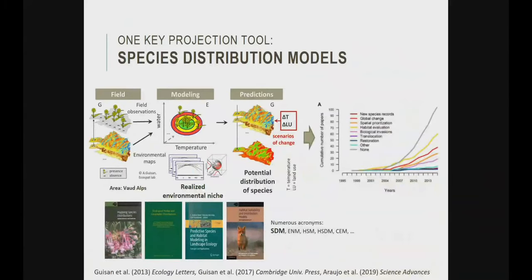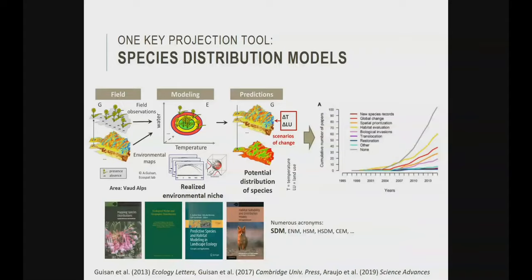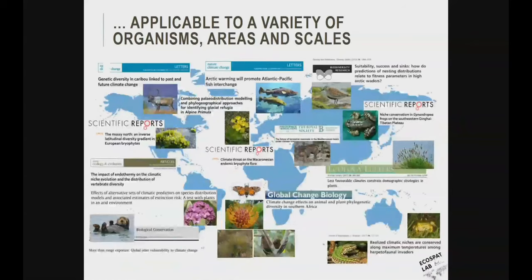One key projection tool is species distribution models. A graph from Araujo et al. 2019 shows the increasing development of SDMs for different conservation issues in the literature. Nick mentioned our book, but there are also earlier books on the topic. The field has developed quite exponentially and has become quite mature, but there is still a lot to develop. SDMs have been applied to nearly every ecosystem and organism on Earth at various scales.